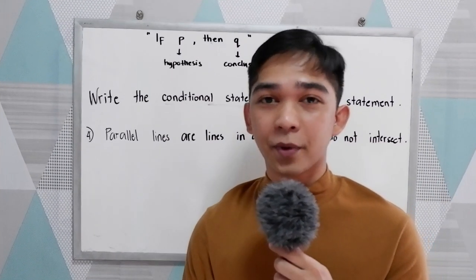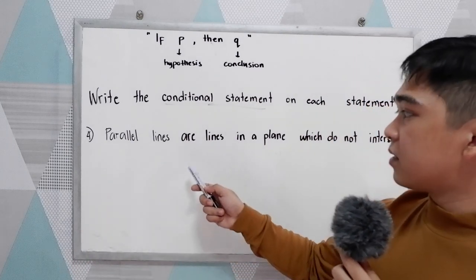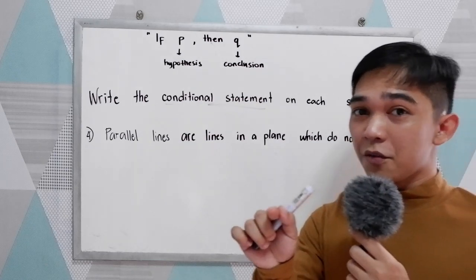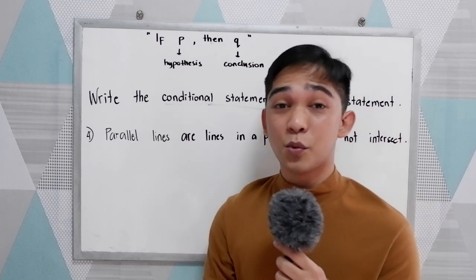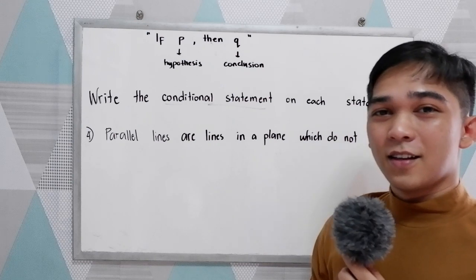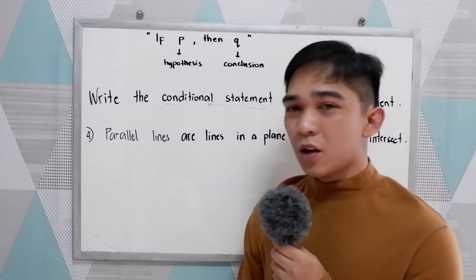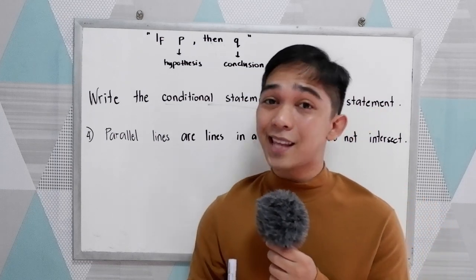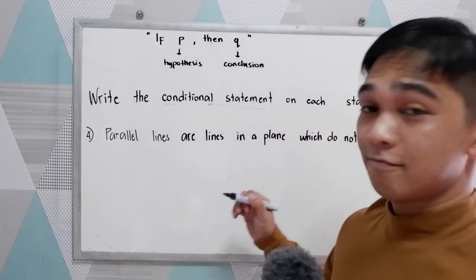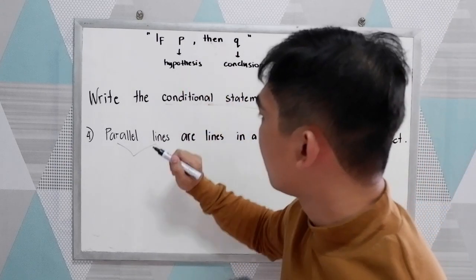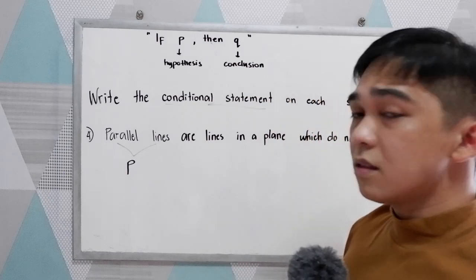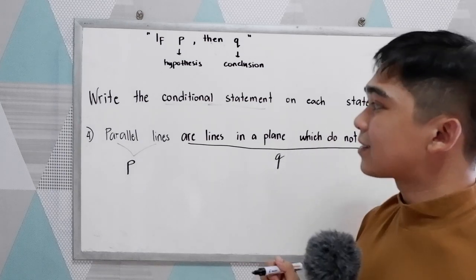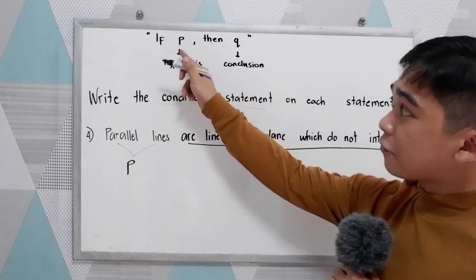Can you try our fourth statement? 'Parallel lines are lines in a plane which do not intersect.' Pause the video if you want to answer, then resume to check. Now let's check your work. Our hypothesis (P) is 'parallel lines,' and our conclusion (Q) is 'lines in a plane which do not intersect.'